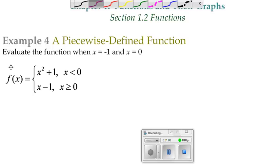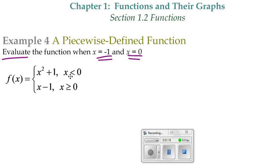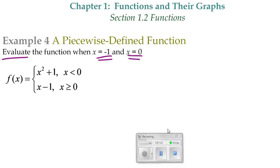We're being asked to evaluate the function. So evaluating means you just take the values that are given to you, and you're going to plug them into our piecewise function. So we need to find f of negative one and f of zero.